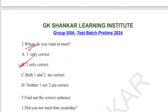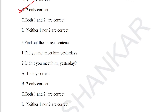Question number 5: find out the correct sentence, asked from common usages — the contracted form of the do verb. Statement 1: 'Did you not meet him yesterday?' Statement 2: 'Didn't you meet him yesterday?' The second option is the structured usage because it uses the contracted form of the do verb. 'Didn't you meet him yesterday?' is the correct usage. Option B is the correct answer.